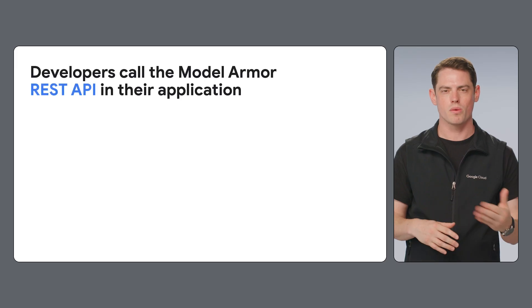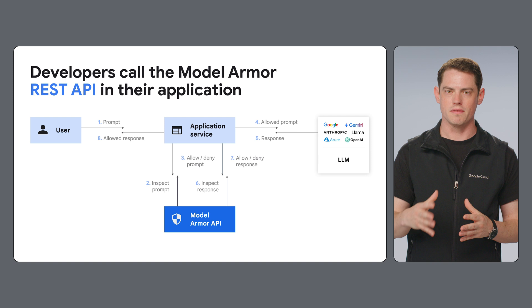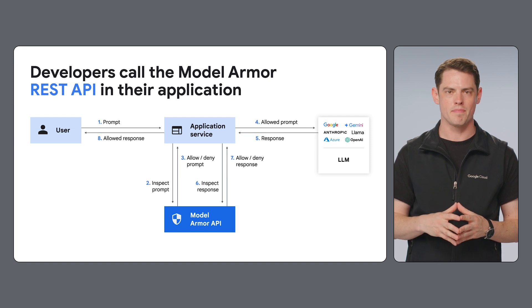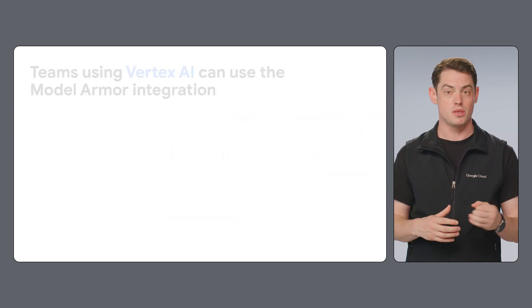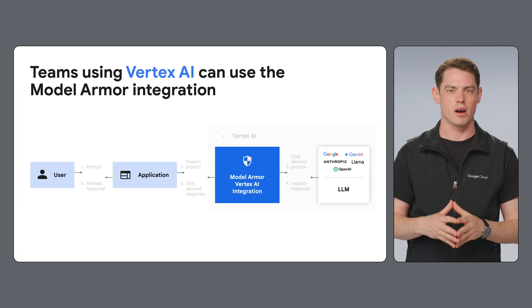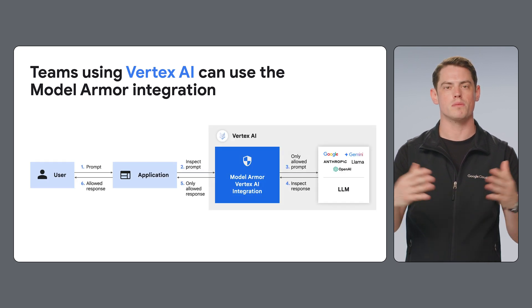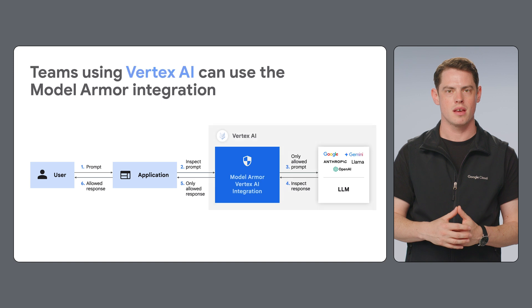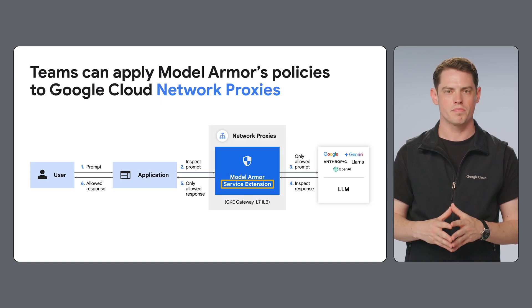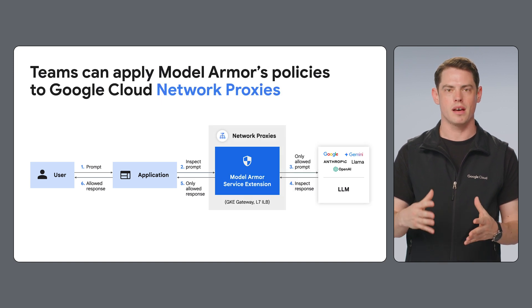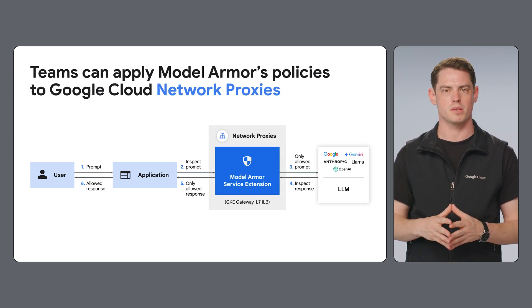Model Armor's architecture is designed to seamlessly integrate with your generative AI applications. There are three approaches to deployment. Developers can call the Model Armor API from within their application. Teams using Vertex AI can use the Model Armor integration to scale protection policies to multiple AI models and apps. And for existing AI workloads, teams can apply Model Armor's enforcement to network proxies.